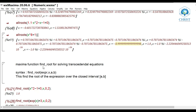The next Maxima function is find_root, mainly for solving transcendental equations. Transcendental equations contain logarithmic or exponential functions; trigonometric functions are also sometimes considered transcendental. The syntax is find_root(expression, x, a, b), where a and b are the interval bounds. This finds the root of the given equation over the closed interval [a, b], so we must also specify the interval.